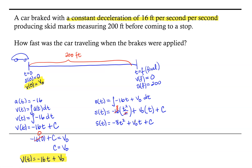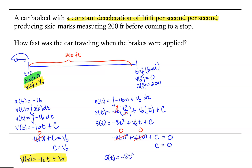Let's use what we know about the initial position of the car: at t equals zero, the position is zero — the moment it hits the brakes and has not yet traveled any distance. Evaluating the position function at zero: negative 8 times 0 squared plus v naught times 0 plus c equals 0. Everything evaluates to zero, so c equals 0. Our position function is s of t equals negative 8t squared plus v naught times t.